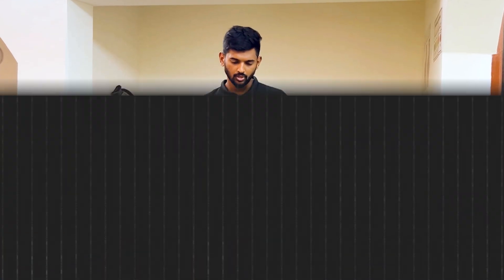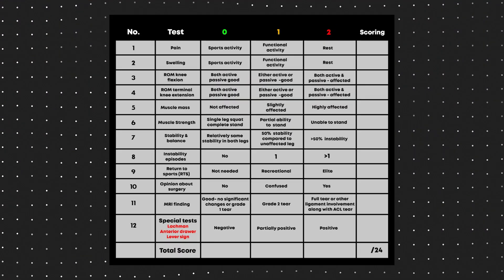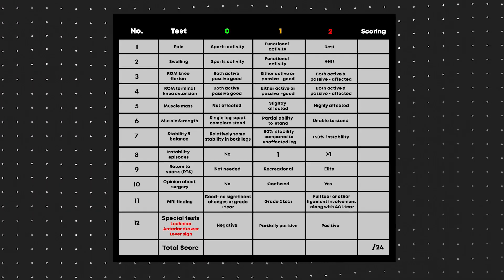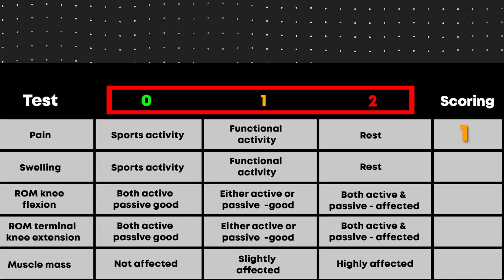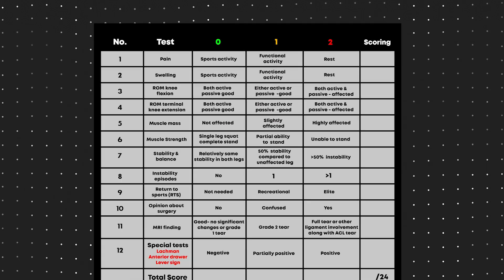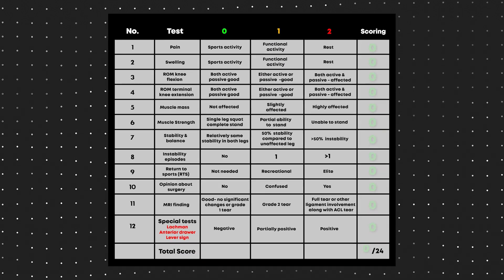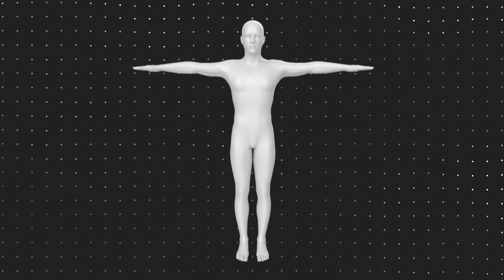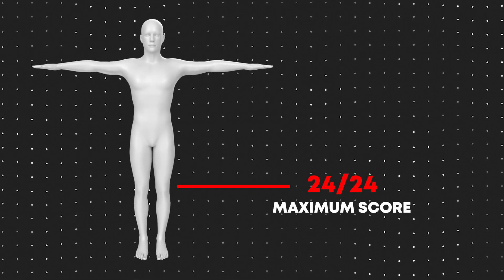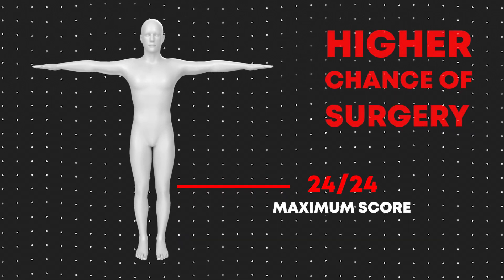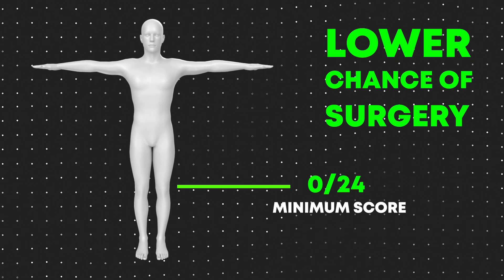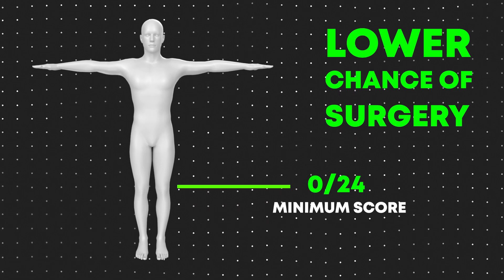You can also practice this in your clinical practice if it makes sense to you. This video is to explain and make you aware of the decision-making framework. The framework has a 12-point scale system — each aspect is scored zero, one, or two — so the maximum score is 24 and minimum is zero. A higher score means a higher chance of needing surgery; a lower score means a lower chance.